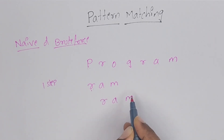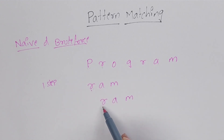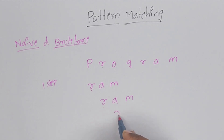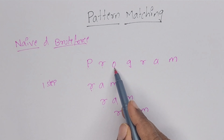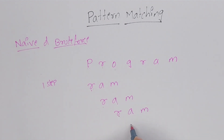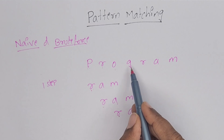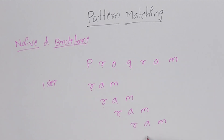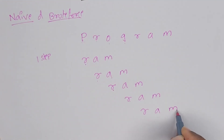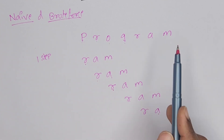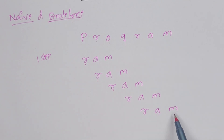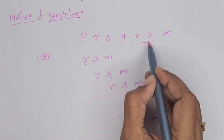Now comparing R, A, M against the string. R is matching, but the next two characters are not matching. If not matching, again the complete pattern shifts one step to the right side. Now O and R are not matching. Shift again — G and R also not matching. Shift again. Now R is matching, next A and A also matching, next M and M also matching.